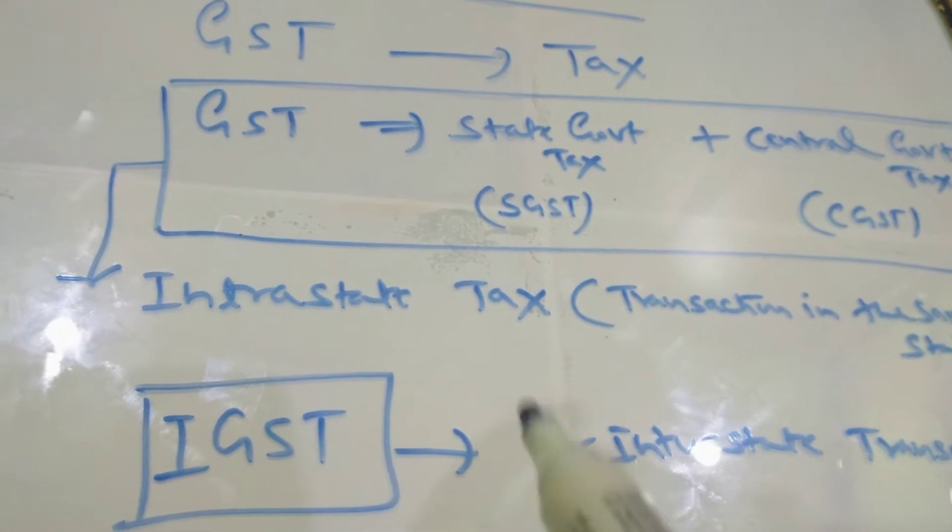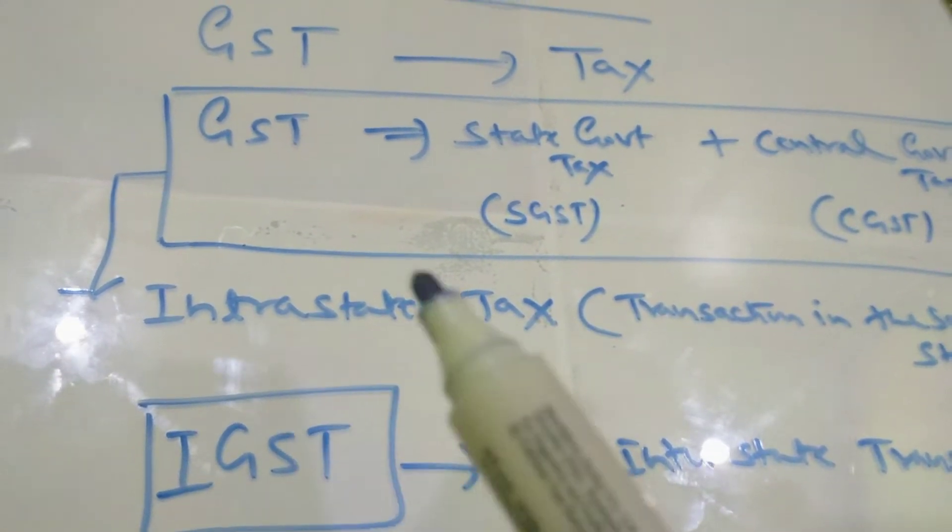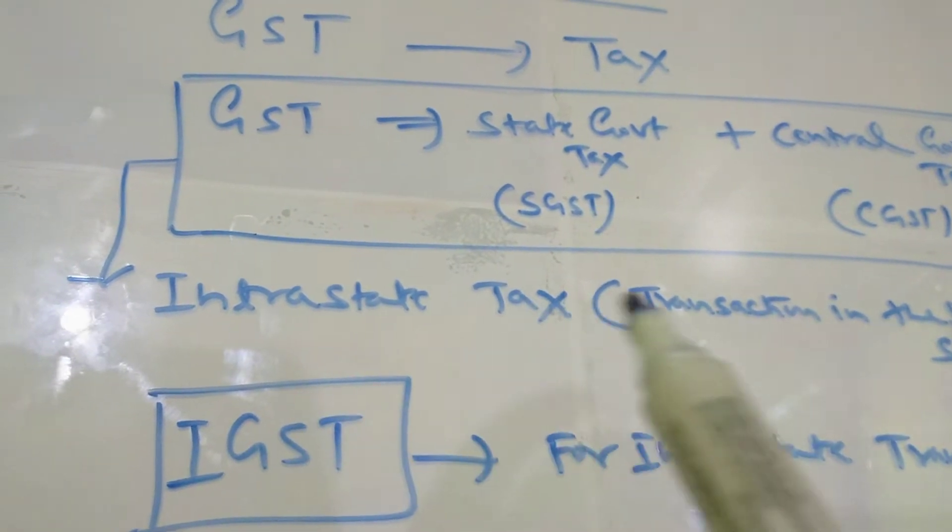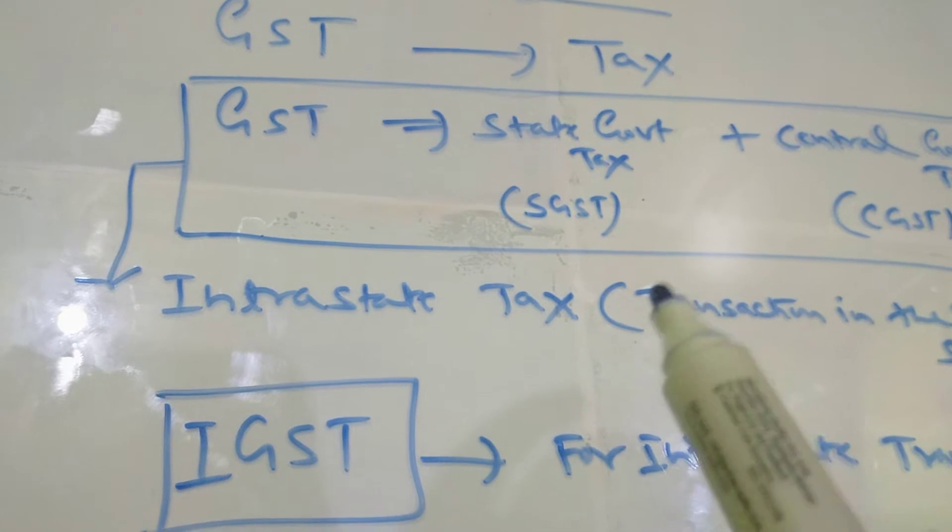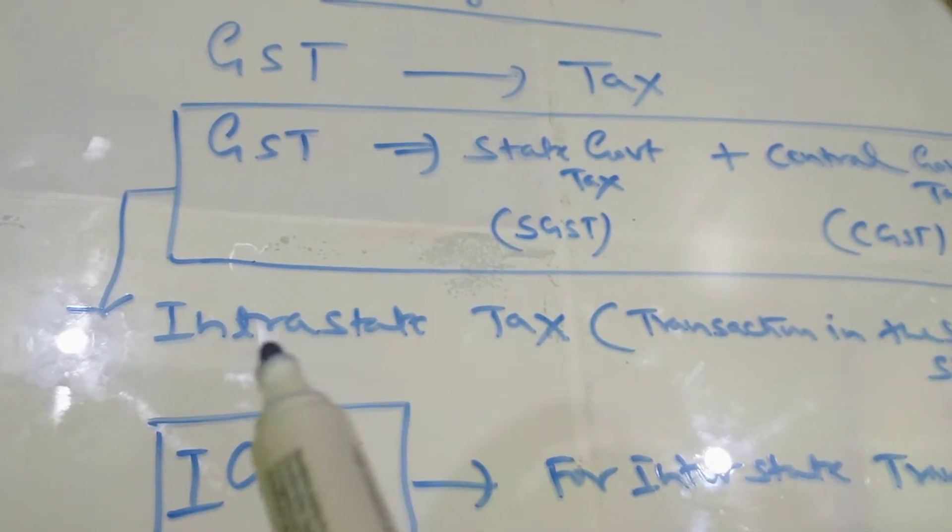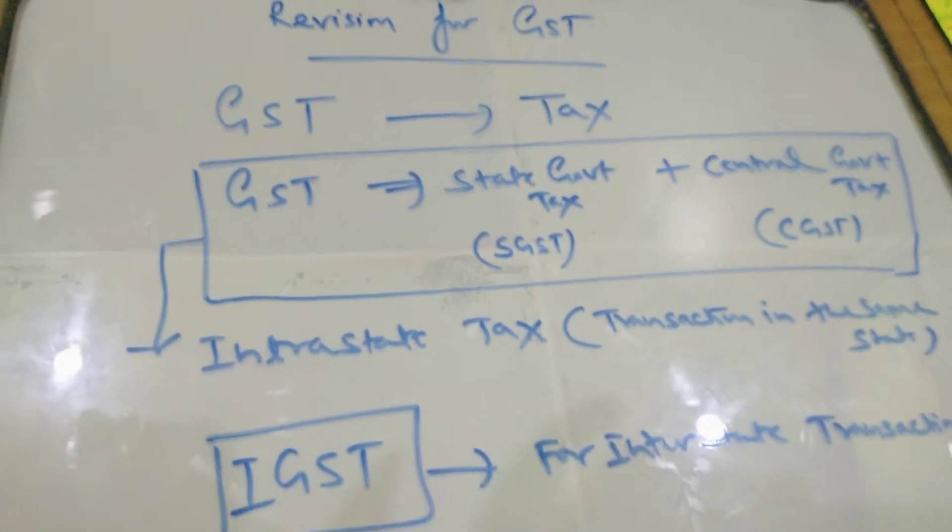If the transaction is going on from one state to another state, it is called interstate. If transaction is going on in one state only, means only one state is involving, then it is called intrastate. So this policy you have to understand first before starting the questions.